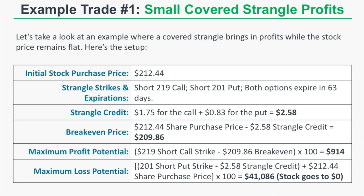The break-even price is $212.44 minus $2.58, which is $209.86. The maximum profit potential is the $219 short call strike minus the $209.86 break-even, multiplied by 100, giving a max profit of $914.